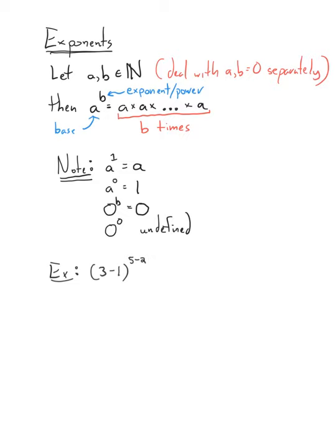Now there are a couple of notes. If you have an exponent of one for any number — even zero — anything to the power of one is just that number itself. So if you ever write down a number, it's assumed to have exponent 1.